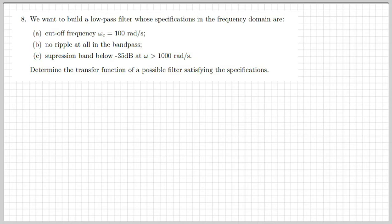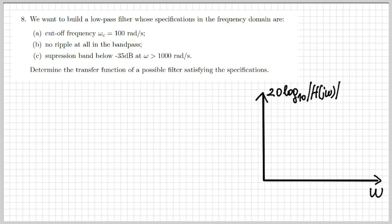Let's move on to the final exercise for today. Now we need to build a low-pass filter with the following specifications in the frequency domain: a certain cutoff frequency, no ripple in the band pass, and a certain suppression band. We're going to do this graphically. Let's start with the first fact: the cutoff frequency has to be at 100 radians. Second, there has to be no ripple at all in the band pass, meaning the response has to be completely flat.